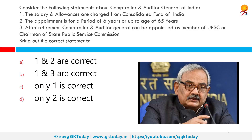Considering statements about the Comptroller and Auditor General of India: one, the salary and allowances are charged from the Consolidated Fund of India; two, the appointment is for a period of 6 years or up to the age of 65 years; three, after retirement the CAG can be appointed as a member of UPSC or chairman of a State Public Service Commission. Statements 1 and 2 are correct.